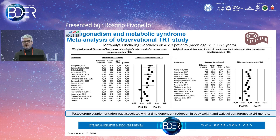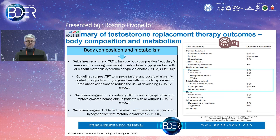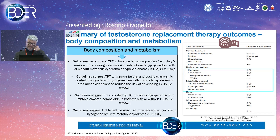Regarding metabolic syndrome, different meta-analyses and studies have demonstrated that testosterone supplementation is associated with a time-dependent reduction in body weight and waist circumference, together with improvement in lipid profile and glucose metabolism. Guidelines suggest using testosterone to improve body composition in subjects with hypogonadism with or without metabolic syndrome or diabetes, and to improve fasting and post-load glycemic control in subjects with hypogonadism and metabolic syndrome or prediabetes, though not specifically to control dyslipidemia.